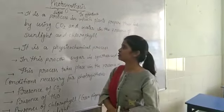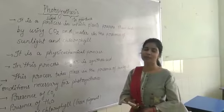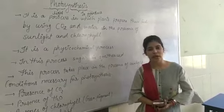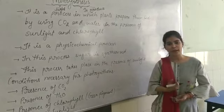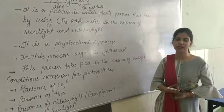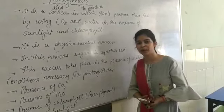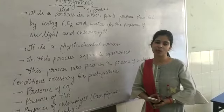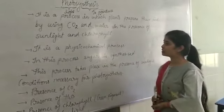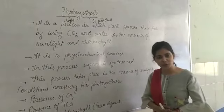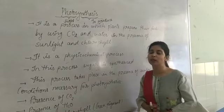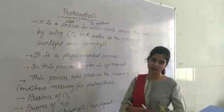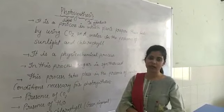Photosynthesis is the process in which plants utilize sunlight or the energy of light to produce their food, by using some raw materials — that is carbon dioxide, water — and in the presence of chlorophyll. Chlorophyll is a green pigment which is present in all the green parts of the plant. We will discuss chlorophyll in detail later on.